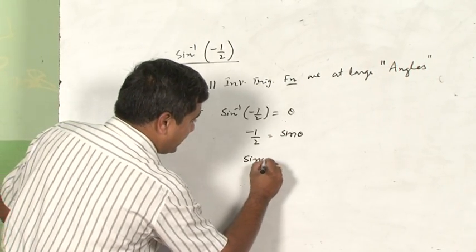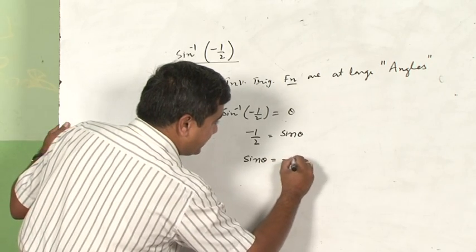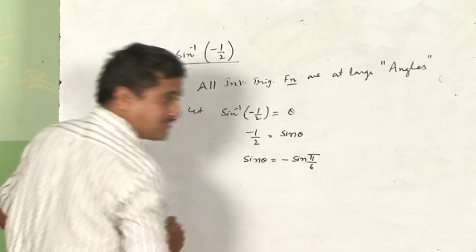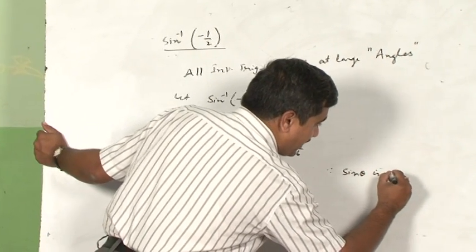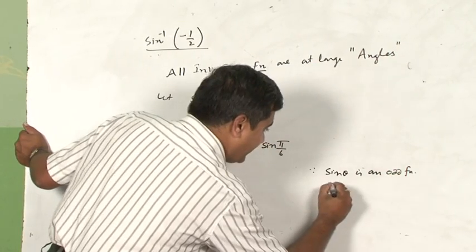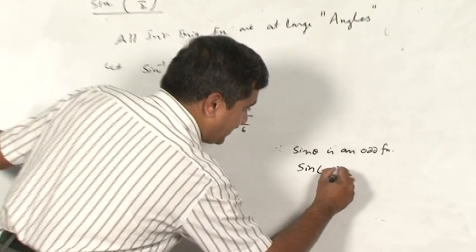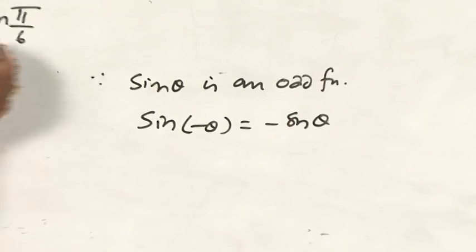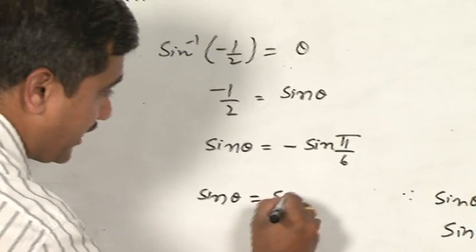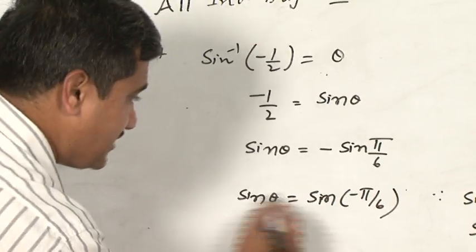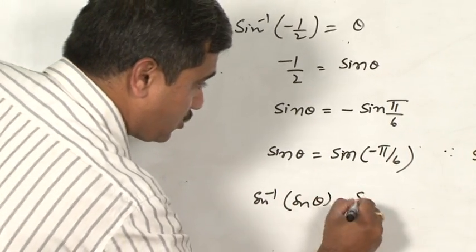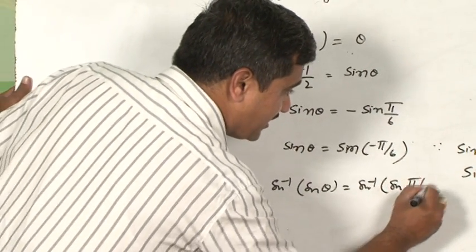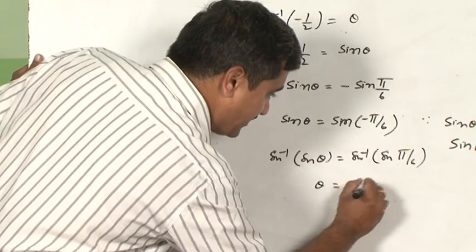Now sin θ = -1/2. I can write this as -sin(π/6). Since sine is an odd function, sin(-θ) = -sin θ. Applying this rule, sin θ = sin(-π/6). Taking sin inverse of both sides, θ = -π/6.